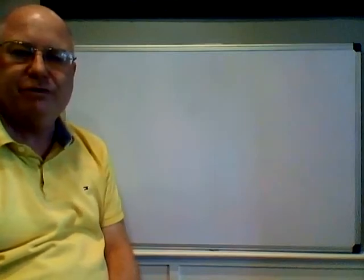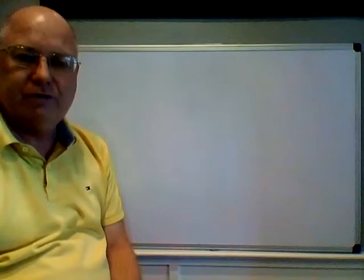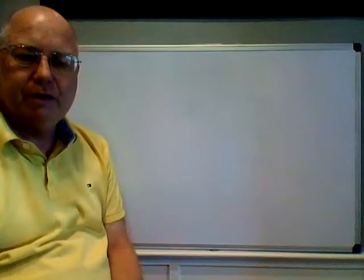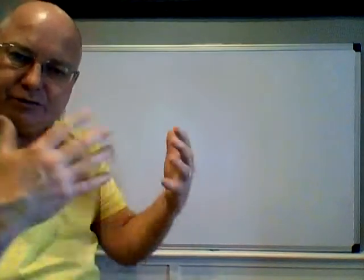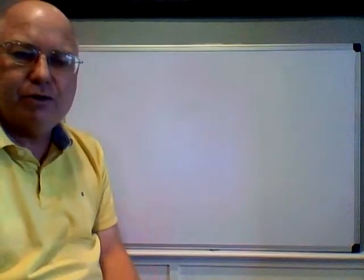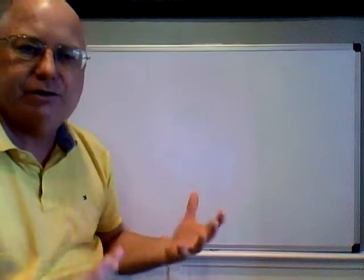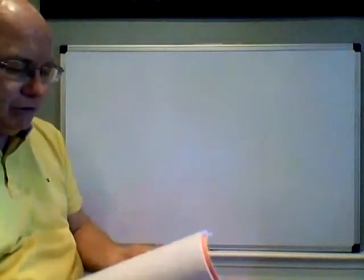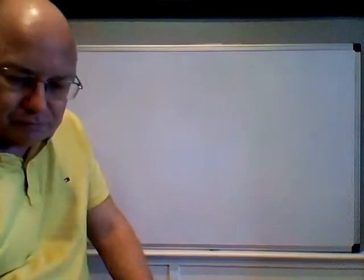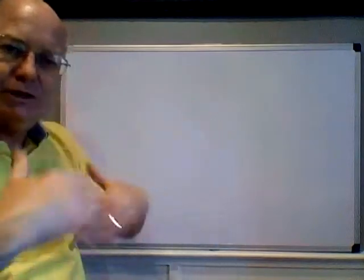Hey everybody, Professor Bob Long here doing your A&P videos. This video is going to cover respiratory system lecture number six, which I believe is going to be our final one. We're going to cover control of respiration — how the brain controls our breathing rate, factors that affect it, things that can speed it up or slow it down under abnormal circumstances, and then respiratory volumes — how much air our lungs can hold. We're covering pages 74 and 75 of the note set. It's much more complex than I'll present, but I'm going to simplify it for this level.